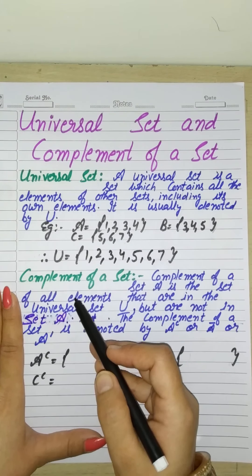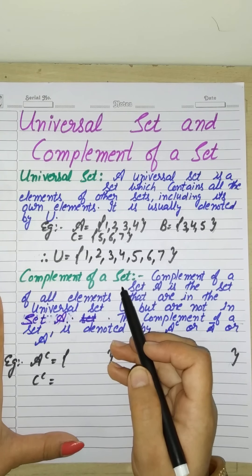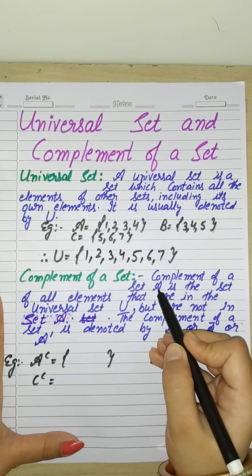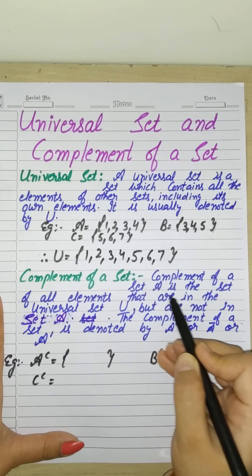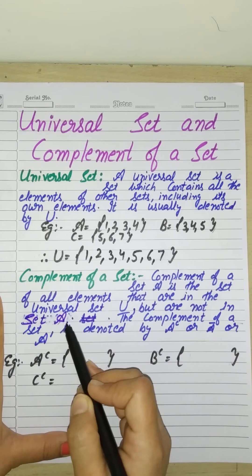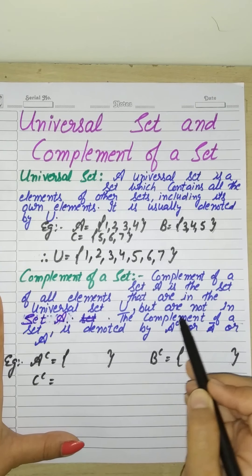Now see, complement of a set. Complement of set A is the set of all elements that are in the universal set U but are not in set A.